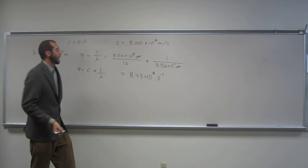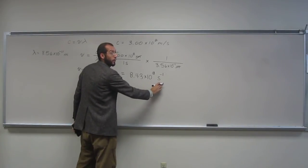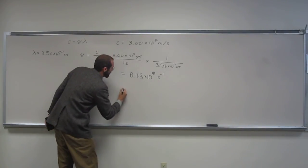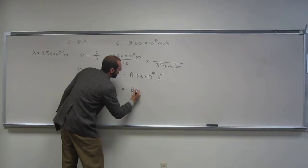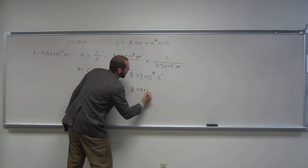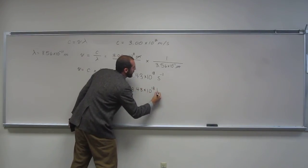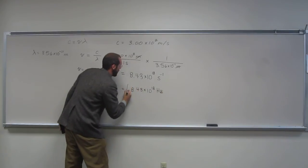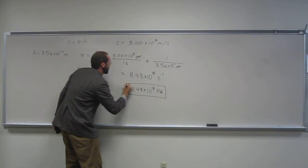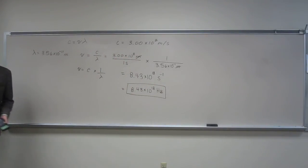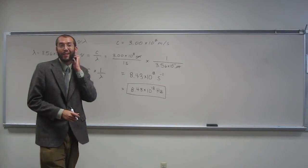remember? And remember what we said about these per seconds, that means hertz, so the answer is going to be 8.43 times 10 to the 18th hertz. So in other words, the frequency of this gamma ray with this wavelength of 3.56 times 10 to the negative 11 meters is 8.43 times 10 to the 18th hertz.